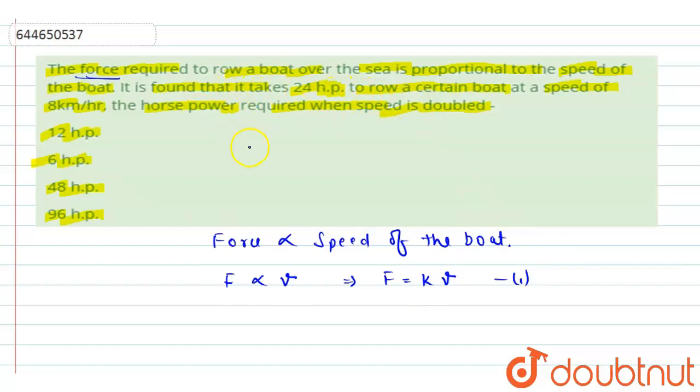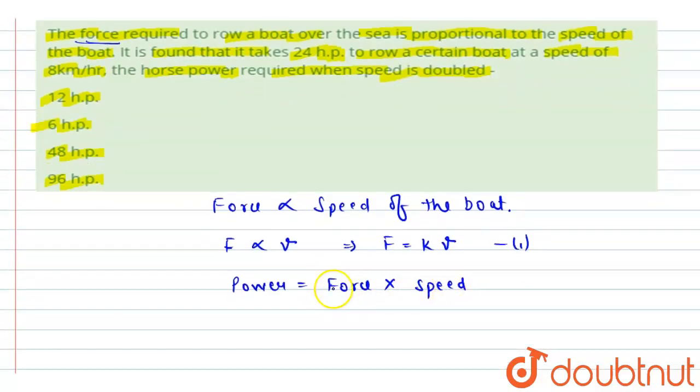Further, we have to find the power. Power is given as force into speed. Speed or velocity is the same. So we can write power equals F times v.